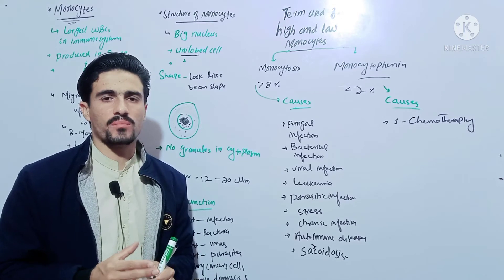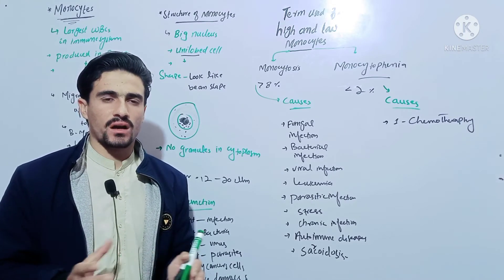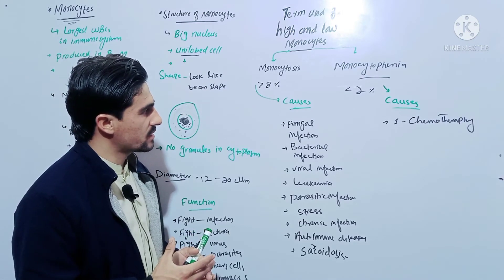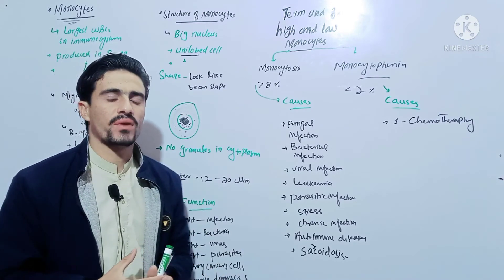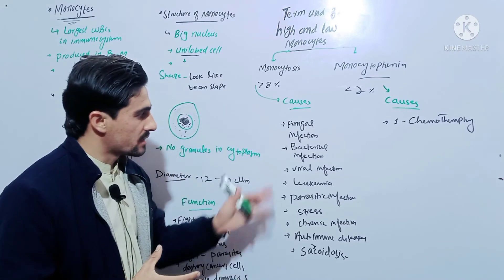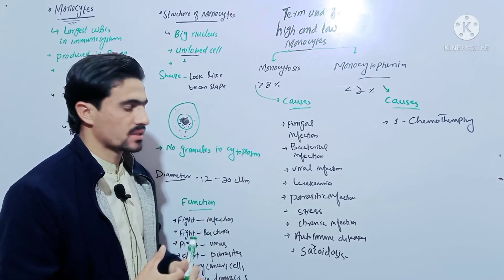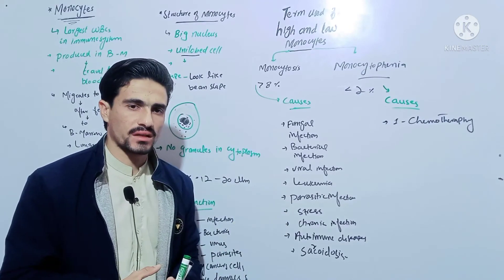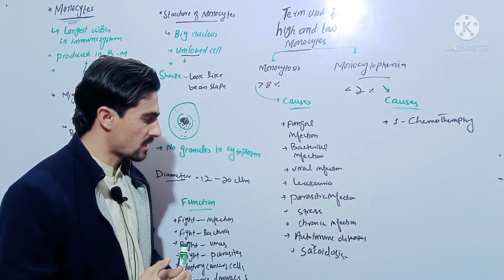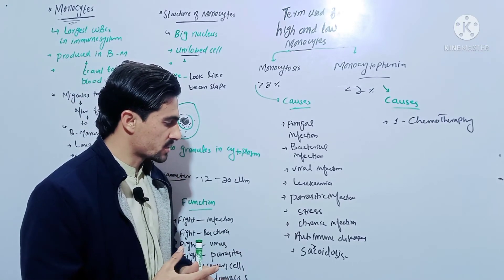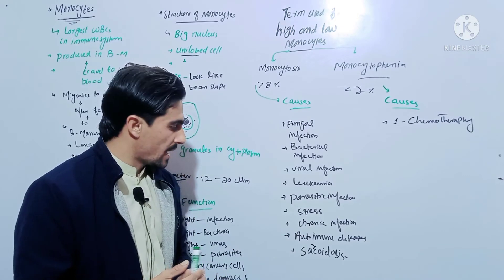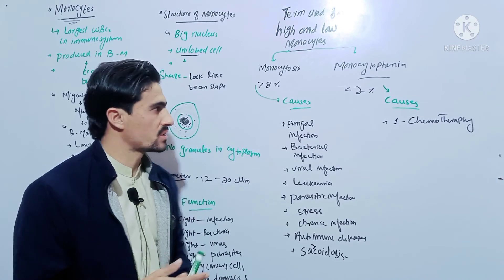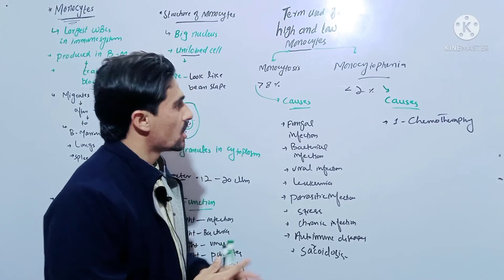Now come to the causes of monocytosis — the basic causes due to which monocytes are increased in our body. The basic causes include fungal infection, bacterial infection, viral infection, leukemia, parasitic infection, stress conditions, chronic infection, autoimmune disease, and sarcoidosis, which is a condition due to which monocytosis occurs in the human body.